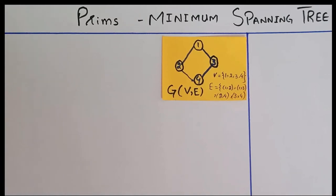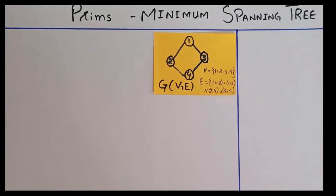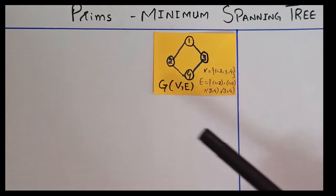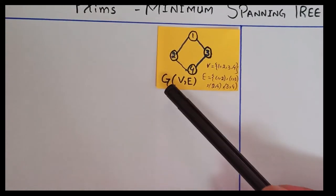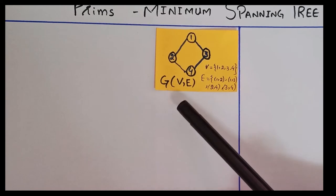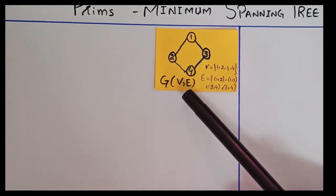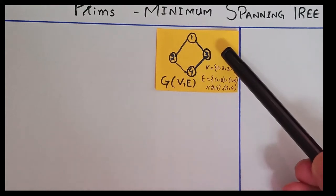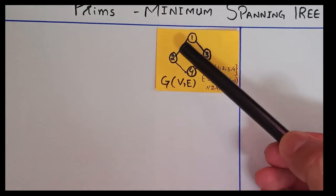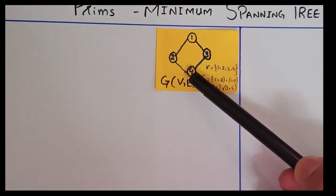Assalamualaikum, welcome to Nasirsov. In this video we will talk about finding the minimum spanning tree with Prim's method. First, look at the graph. We have a graph represented by G, and it is the combination of vertices and edges. For example, this is the graph and the vertices are one, two, three, and four.